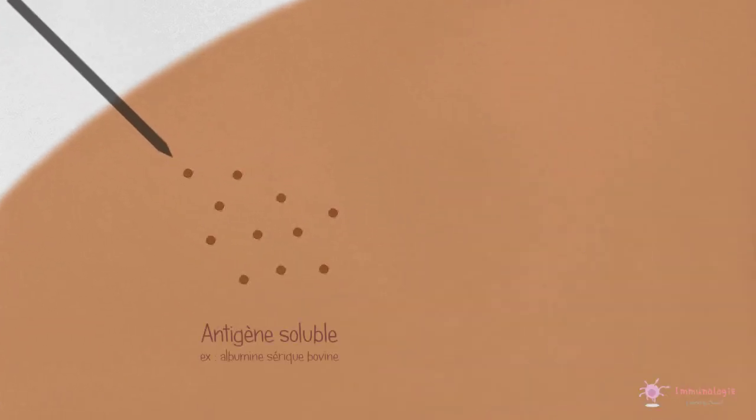Le premier modèle, la maladie sérique. L'immunisation d'un animal tel qu'un lapin avec une forte dose d'un antigène protéique étranger conduit à la formation d'anticorps dirigés contre les différents épitopes de cet antigène.